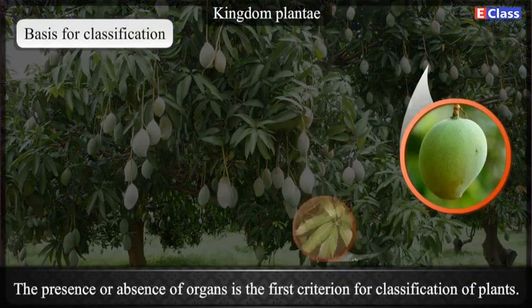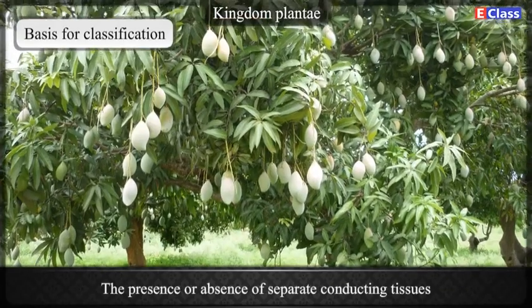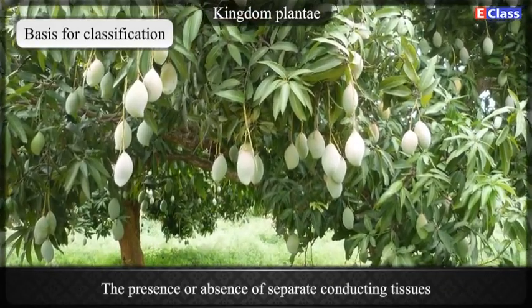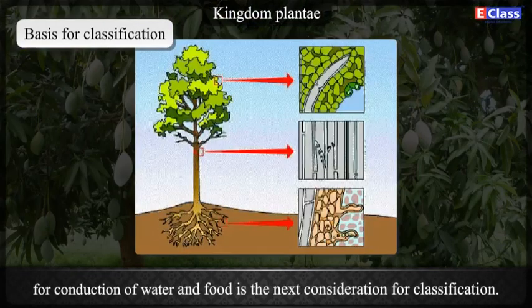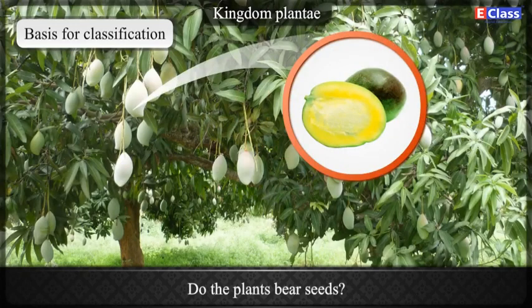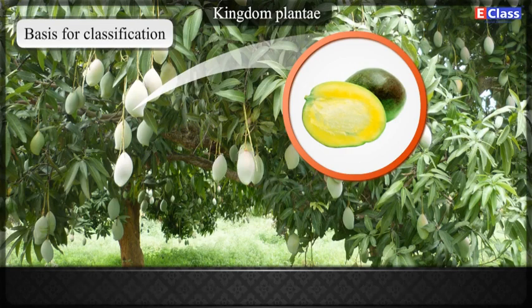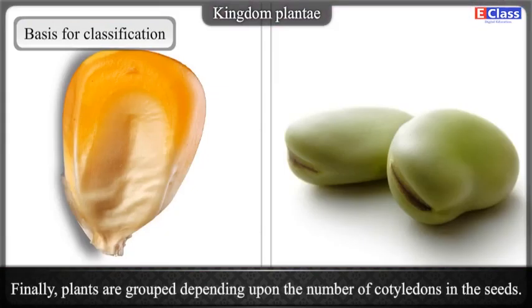The presence or absence of organs is the first criterion for classification of plants. The presence or absence of separate conducting tissues for conduction of water and food is the next consideration. Whether the plants bear seeds, and if so, whether the seeds are enclosed in a fruit or not, is also an important criterion. Finally, plants are grouped depending upon the number of cotyledons in the seed.